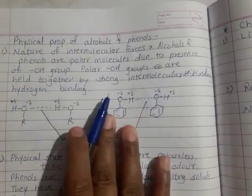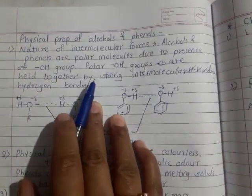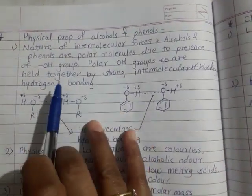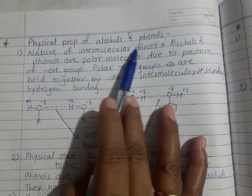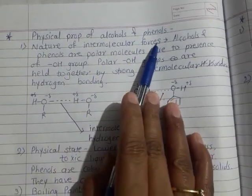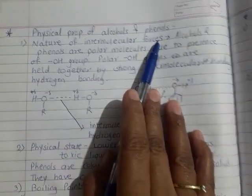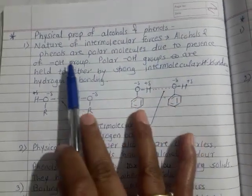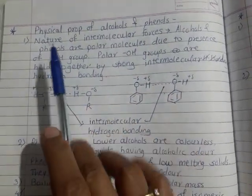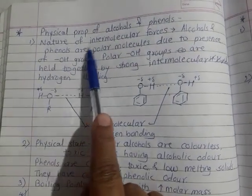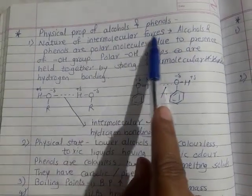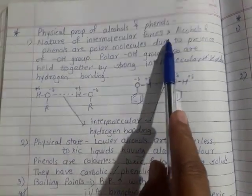After preparation of phenols, the next point is the physical properties of alcohols and phenols. Four properties are given here. The first property is the nature of intermolecular forces.